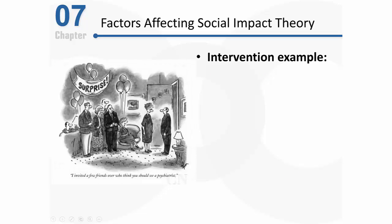Check out this example involving a comic version of an intervention. The comic says: 'I invited a few friends over who think you should see a psychiatrist.' Here we have our target person, and here we have all of these different sources of social influence trying to influence that target person. According to social impact theory, there are three key factors that will help us identify how much pressure will be exerted on that target person.